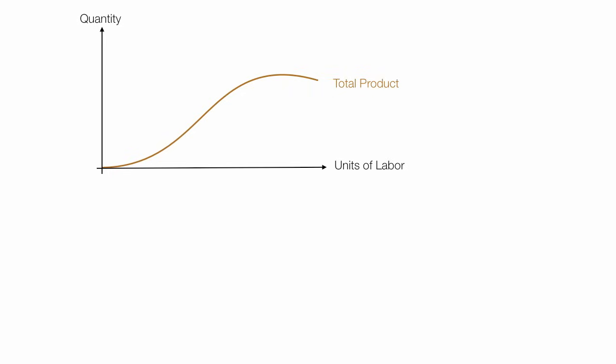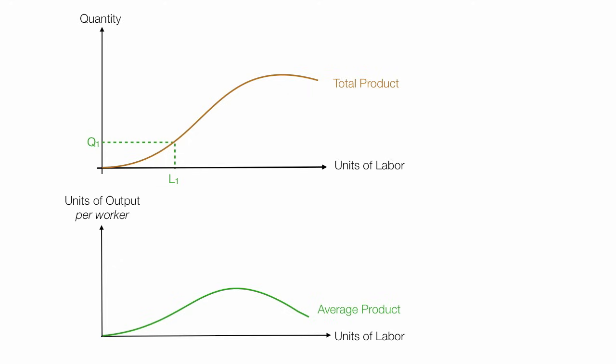Now, if I take that same unit of labor line, horizontal line, and I pull it down like that, that's units of labor. And on the y-axis, I have units of output per worker. Now, I can plot average product. Now, average product is the amount of labor, in this case L1, divided into the amount of quantity, is average product.